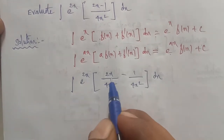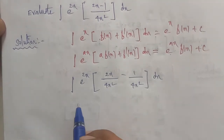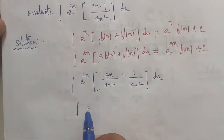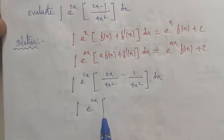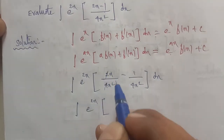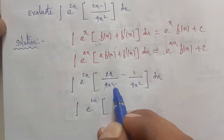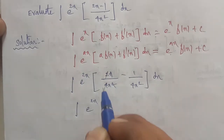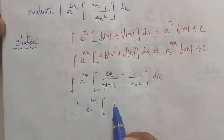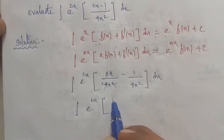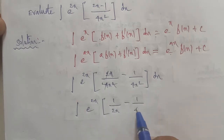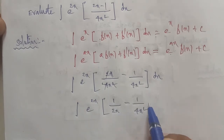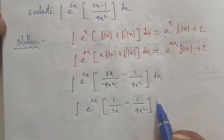Next, we cancel the terms. The e power 2x and x terms cancel. After cancellation, the remaining part becomes integral of e power 2x times (1 by 2x minus 1 by 4x square) dx.